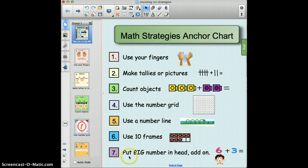Number seven is put big number in head and add on. So the bigger number out of six plus three is six, so you put it in your head and add on three. The reason why I have so many visuals on this first page is because first graders cannot always read all these numbers. If you show them a visual like the hands, they're going to know to use their fingers. They might not be able to read all these different things, but they're going to understand the different strategy based on the pictures.